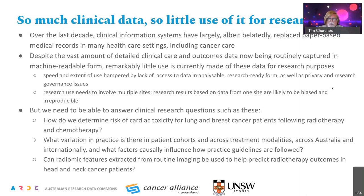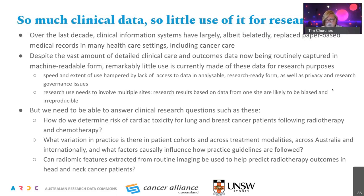We need to use these data to answer questions such as determining the risk of cardiac toxicity for lung and breast cancer patients following radiotherapy and chemotherapy. We also need to understand what variation exists in practice across patient cohorts and treatment modalities in Australia and internationally. More technically, can radiomics — that is, imaging features extracted from MRI and CAT scans — be used to help predict radiotherapy outcomes in specific cancer patients?